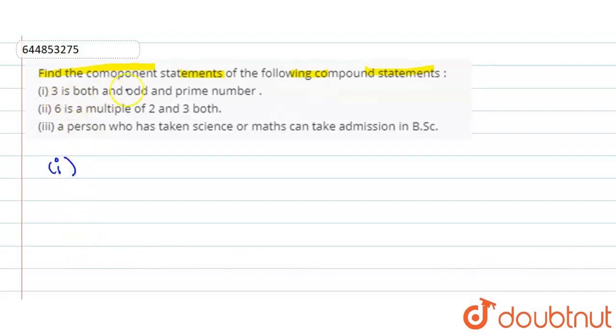The first statement is: 3 is both odd and prime number. So the first component of this statement, let's say p, is 3 is an odd number. And the second component statement q is: 3 is a prime number.